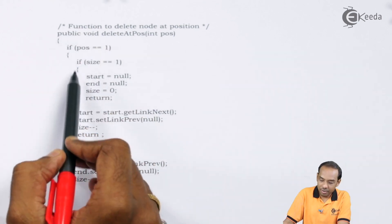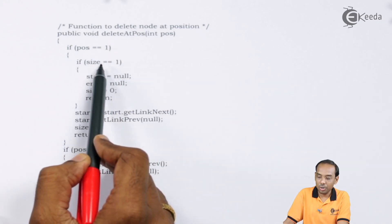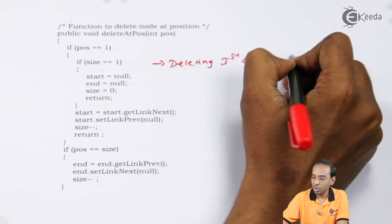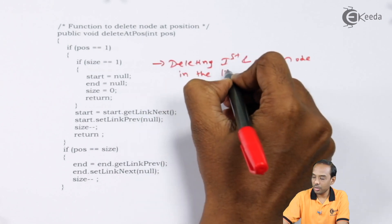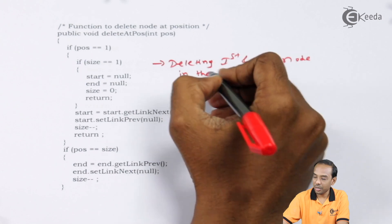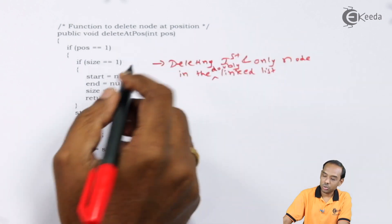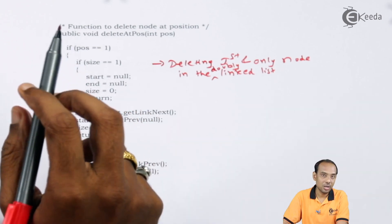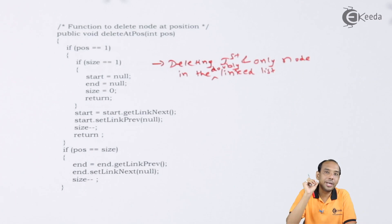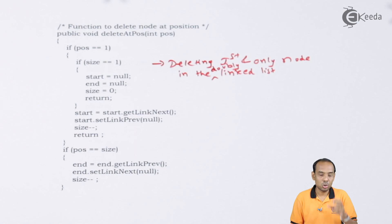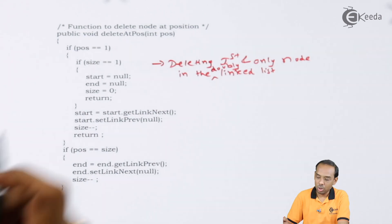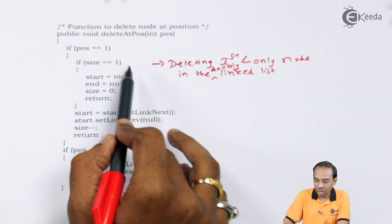If position equals one and size equals one, we are deleting the first and only node in the doubly linked list. In that case, start will point to null, end will point to null, and size will come to zero. We return the size value, so size becomes zero.